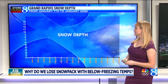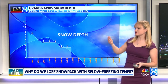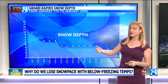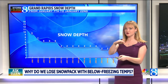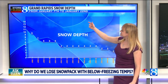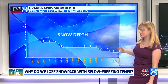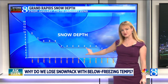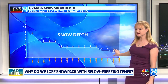This month has been a really great time to notice this process because we saw so much snow early on in the month — close to about a foot in terms of snow depth — and then steadily but surely we watched that snow depth shrink even when our temperatures stayed well below freezing.